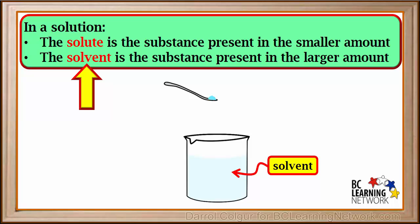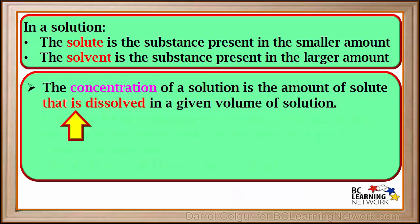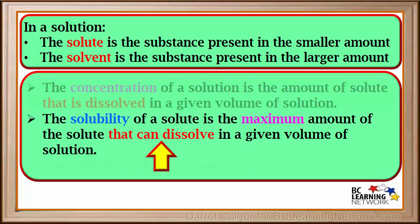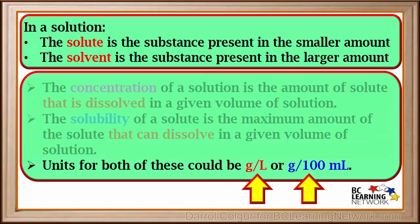We need to give you a couple more definitions now. The concentration of a solution is the amount of solute that is dissolved in a given volume of solution. And the solubility of a solute is the maximum amount of solute that can dissolve in a given volume of solution. Many different units can be used for these, but common ones are grams per liter or grams per 100 milliliters.